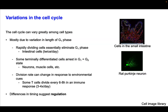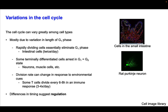The cell cycle can vary greatly among different cell types, and this is mostly due to variation in the length of the G1 phase. Rapidly dividing cells essentially eliminate the G1 phase — intestinal cells, for example, divide about twice every day. Some terminally differentiated cells, which have acquired their differentiation status and play an important function in the body, arrest in G1. When they're permanently arrested in G1, we refer to that as the G0 state.